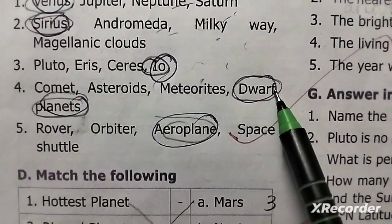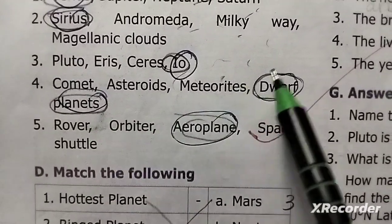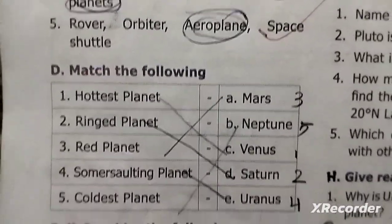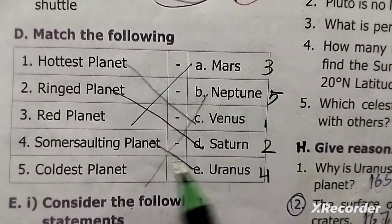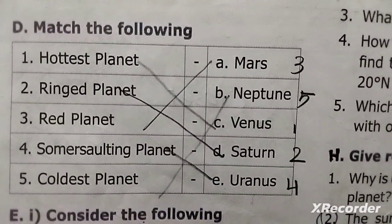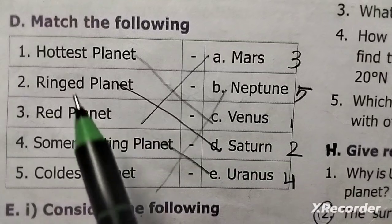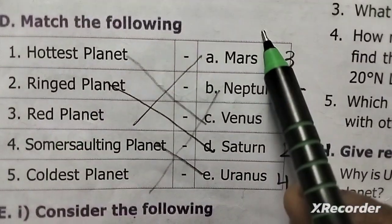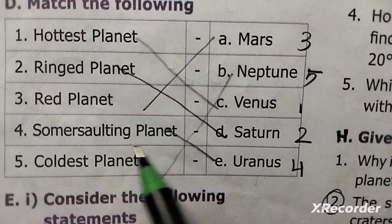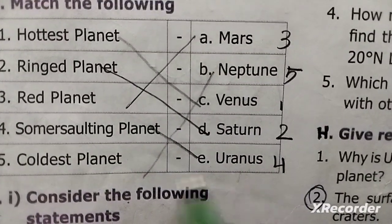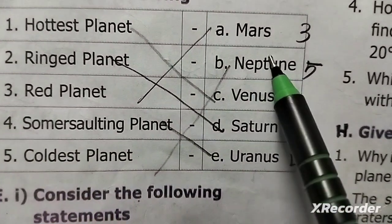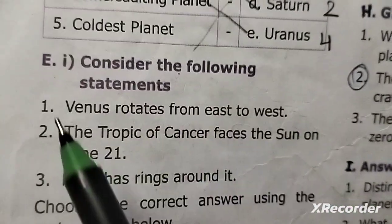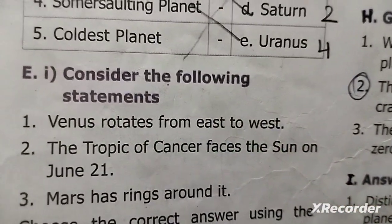Match the following. Hottest planet: Venus. Ringed planet: Saturn. Red planet: Mars. Somersaulting planet: Uranus. Coldest planet: Neptune.